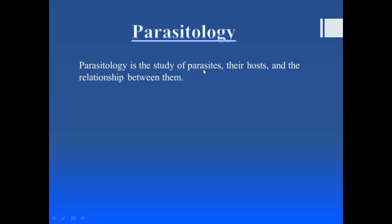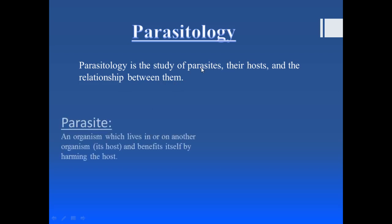Now we will take one at a time — first the parasite, then the host, and then the relationship between them. What exactly is a parasite? A parasite is an organism which lives in or on another organism and gains its benefit by harming the host. It causes harm to that organism and as a result gains benefit — mainly food, nutrients, or shelter.